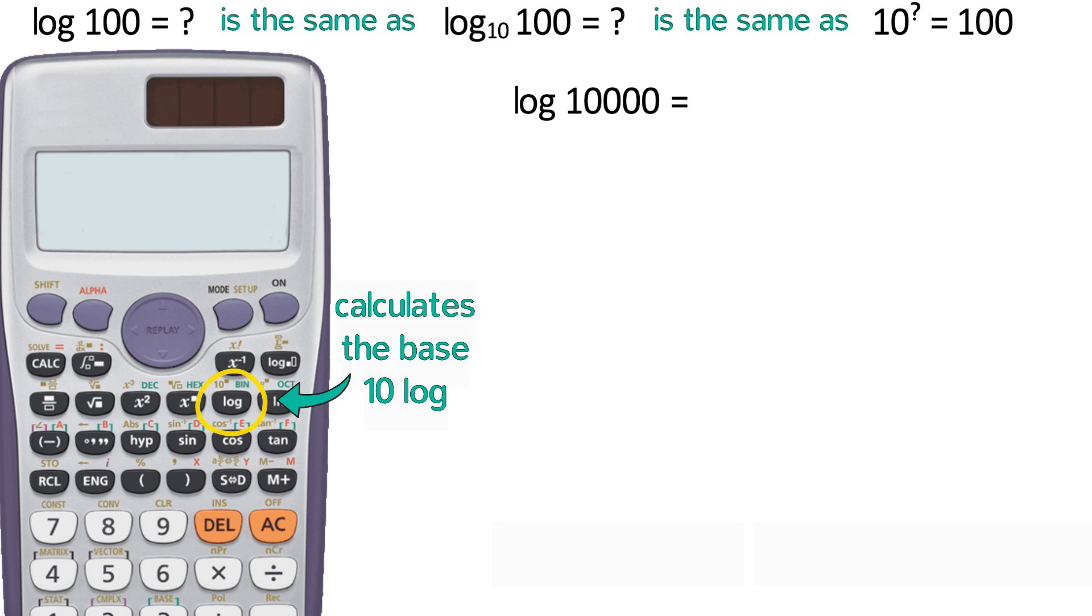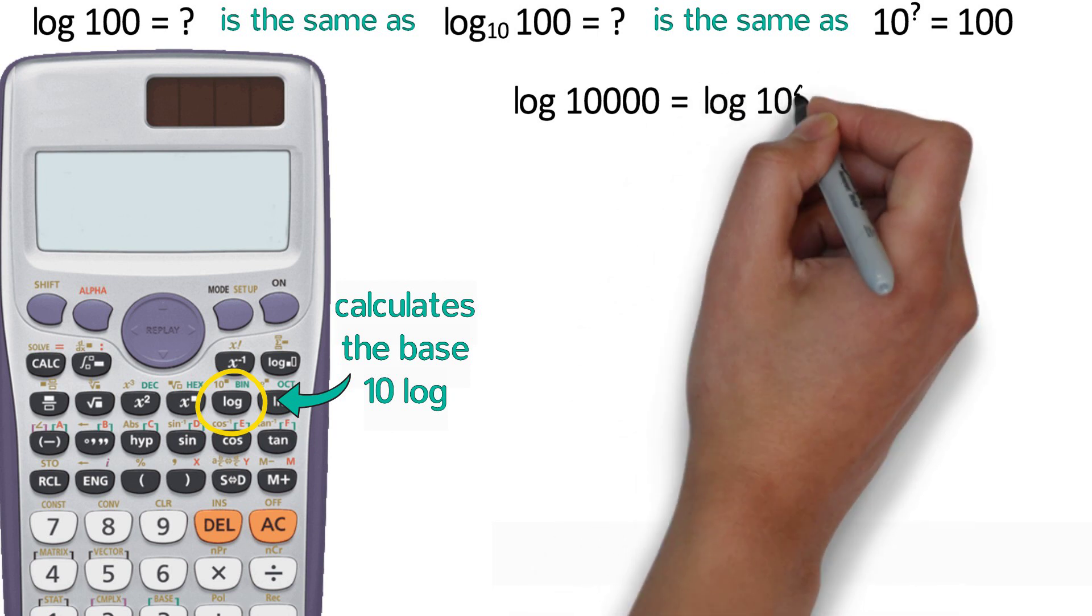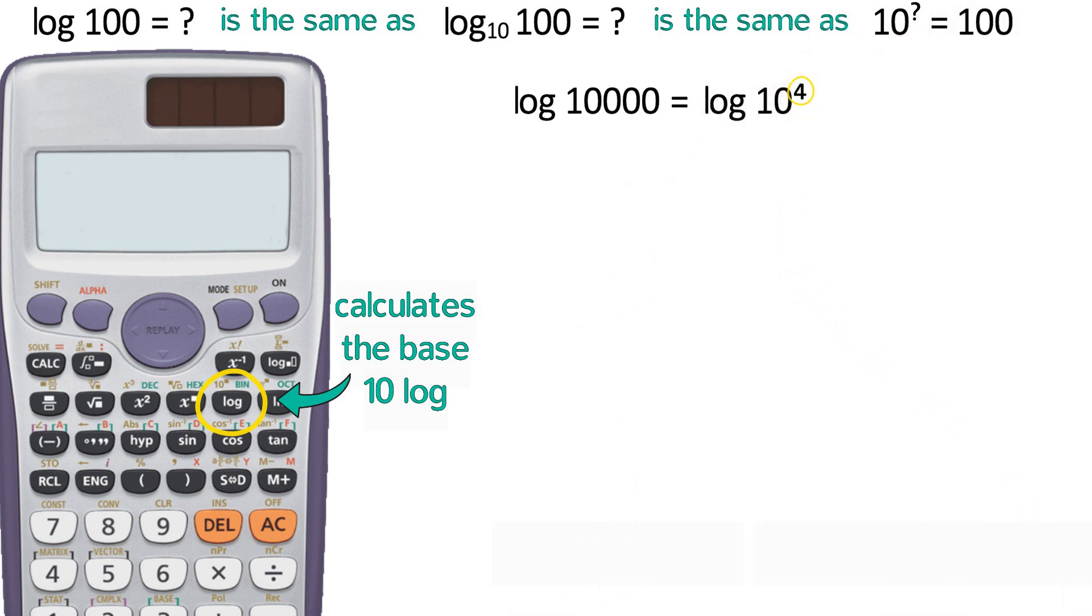10,000 is 10 to the fourth power, and the log of 10 to the fourth is simply the exponent, that is, 4.